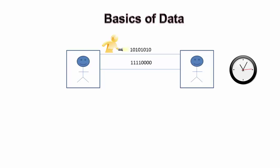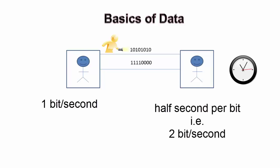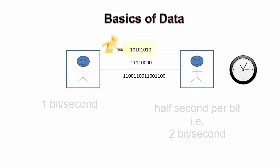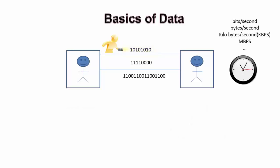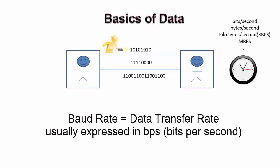Now, let us assume that there was a communication gap and the first person was trying to send one bit per second but the other person thought the rate was half a second per bit. What will be the result? The other person will receive 1100 1100 1100 1100. That is why it is extremely important that both the communicating devices must be set on the same baud rate, meaning data transfer rate.